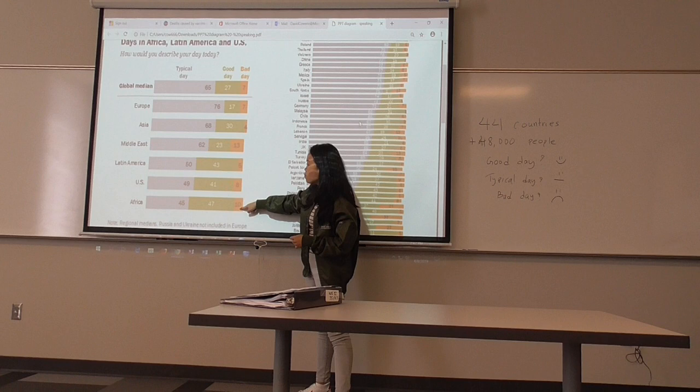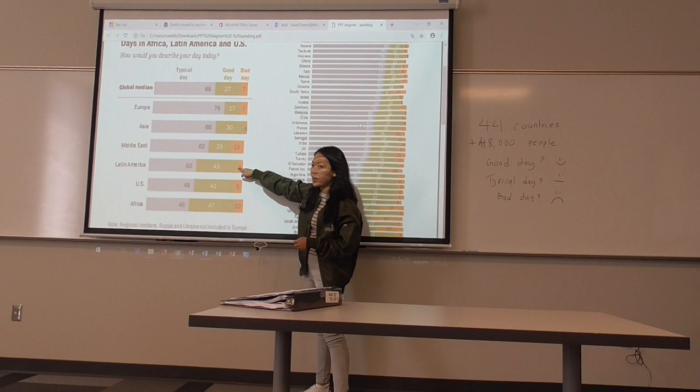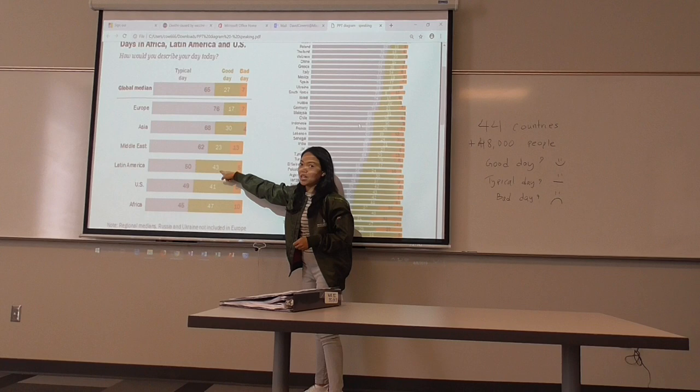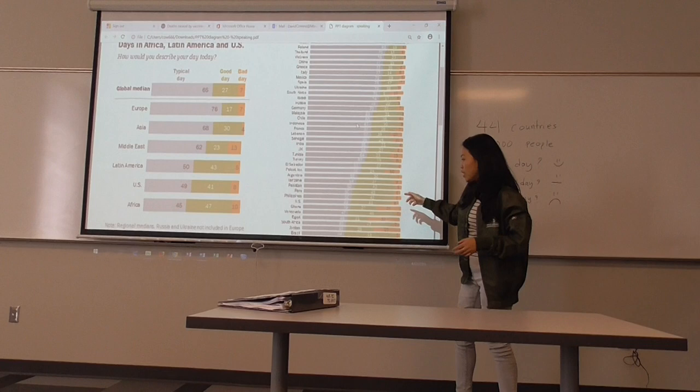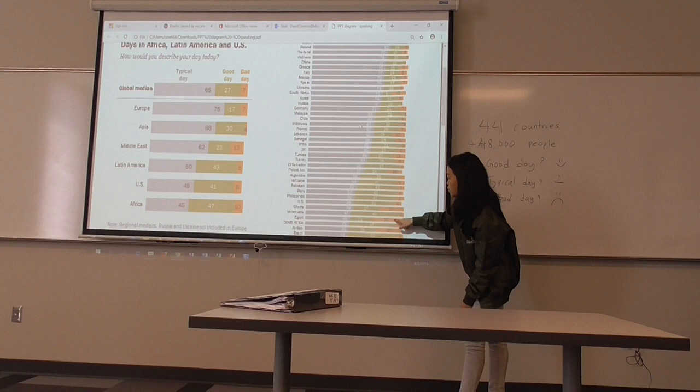The two topmost continents that have the highest percentage saying they had a good day are Africa and Latin America, at almost 47 percent and 43 percent. On the other hand, many of these countries have their highest percentage saying they had a bad day, about 13 percent. For example, you can see over here that Jordan and Egypt have the most percentage saying they had a bad day, at about 27 percent and 32 percent.